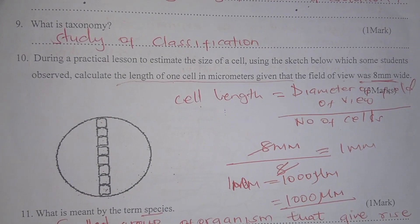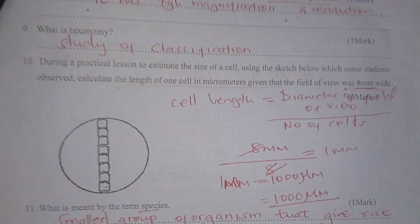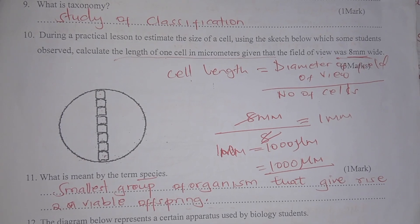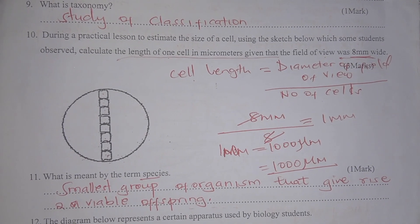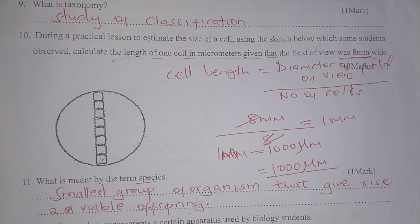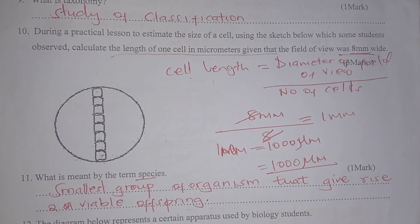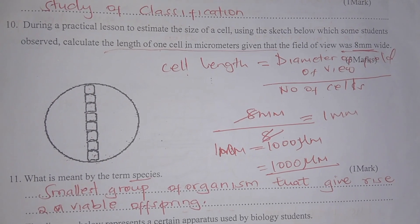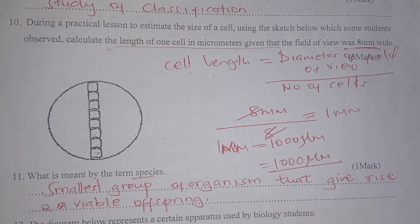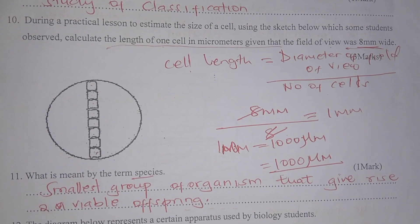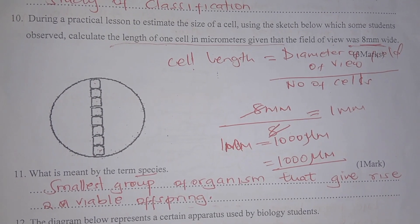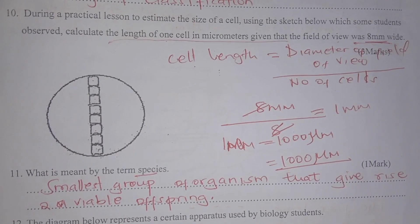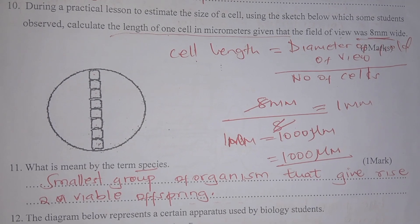What is taxonomy? Taxonomy is the study of classification. During a practical, students estimated the size of a cell. Calculate the diameter of the cell in micrometers given that the field of view diameter is 8 millimeters. The diameter of the field of view is 8 millimeters and the number of cells across it is 8, so 1 millimeter equals 1000 micrometers.